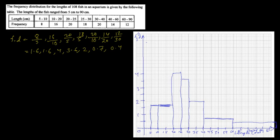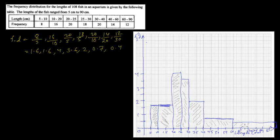And then we can do some shading. That's it — the histogram is complete up to 90.